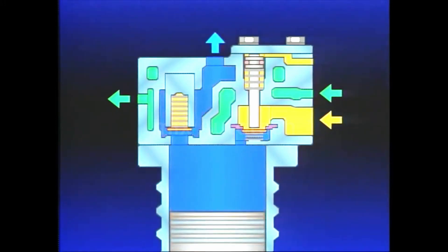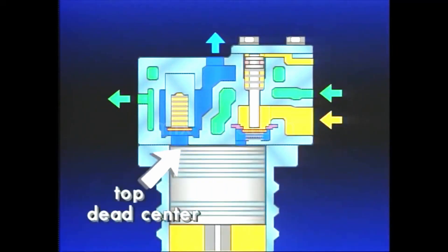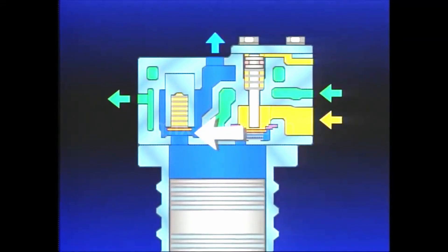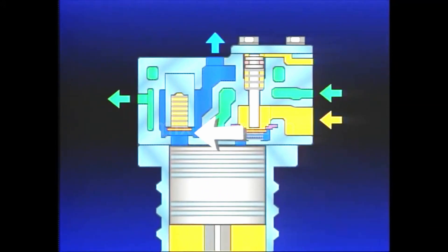As the piston begins its compression stroke, the inlet valve closes, and the air in the cylinder bore is compressed as the piston approaches top dead center. During air compression, the discharge valve opens, allowing compressed air to flow from the cylinder bore past the open valve and out the discharge port into the supply reservoir.